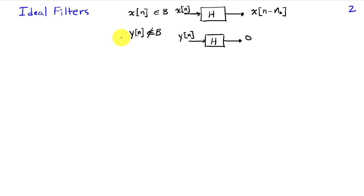Now if the signal doesn't lie in the pass band, B, then the filter is supposed to block it, or completely zero out the output in response to that input.